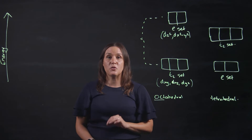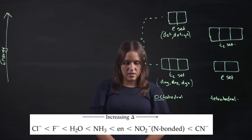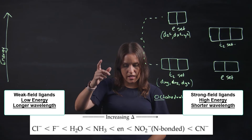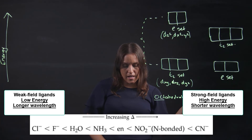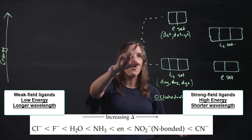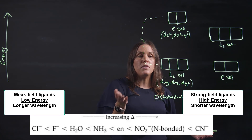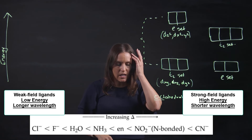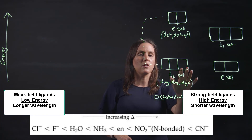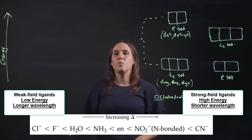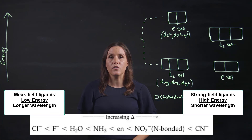If you look at the spectrochemical series: on the side with chlorine, that is the side with the lowest energy gap. With CN⁻, you have a high energy gap. With a low gap such as chlorine, you might fill the bottom and top sets simultaneously; with a high gap such as CN⁻, you would completely fill the bottom set first — the T2 set for octahedral, or the E set for tetrahedral — before putting electrons into the higher energy set. This determines whether the complex is high spin or low spin.